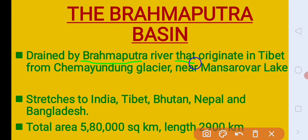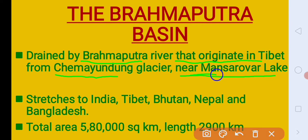Brahmaputra River originates in Tibet from Chemayungdung Glacier near Mansarovar Lake. Tibet mein Mansarovar Lake hai, wahaan par jo Chemayungdung Glacier hai, wahaan se Brahmaputra River nikalti hai. Brahmaputra River stretches to India.